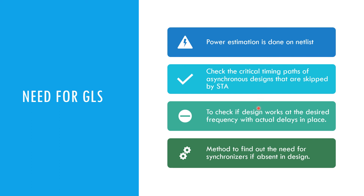You need to check if the design works at a desired frequency with actual delays in place. Even though STA checks this with timing, it is important to check because of the missing constraints that may be introduced in STA. Also, if synchronizers are missing on some of the nets, it will generate X onto these nets and there will be an X propagation, which can be caught in your gate level simulation.